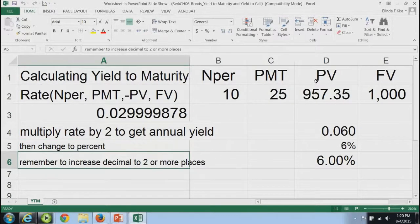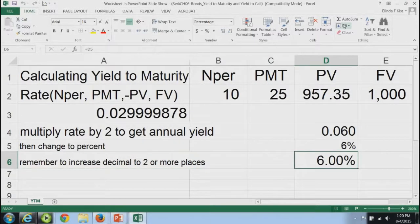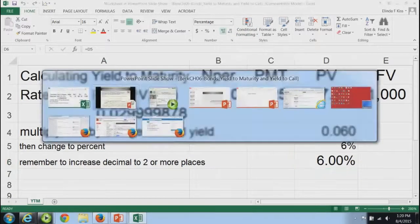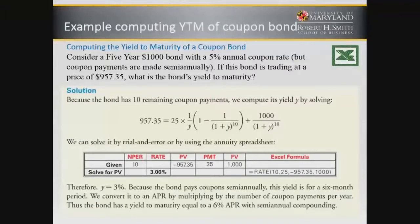Now this comes out to six percent for the yield to maturity. Now that we've found the yield to maturity, what if this bond were callable? This bond was selling at a price below par, so chances are it would not be called, because the yield here is higher than the coupon rate, so the company would not want to call it.